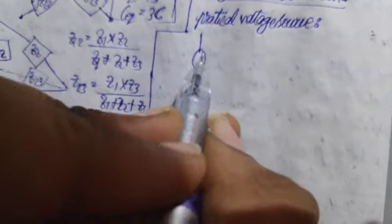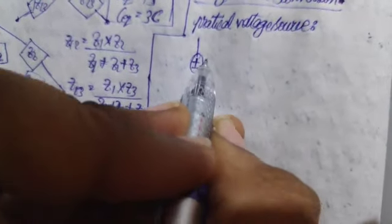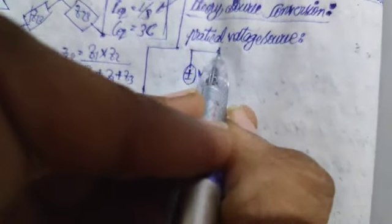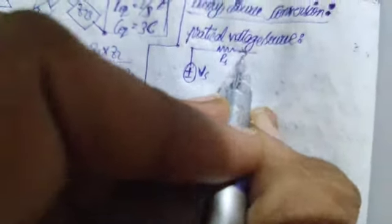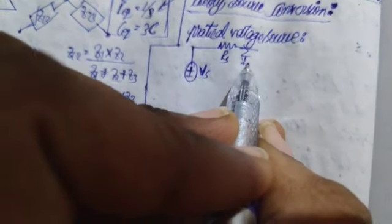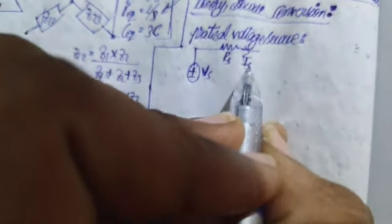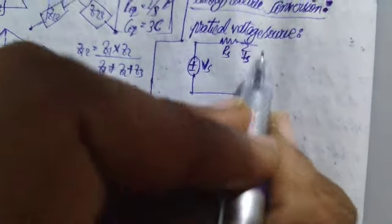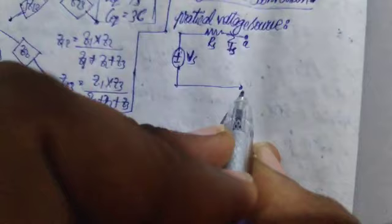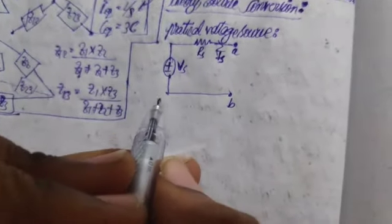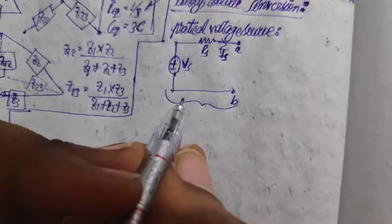First, let's assume we have a practical voltage source. For the practical voltage source we have a positive-negative polarity with an internal resistance RS, and the current passing through it is IS (subscript S). We have terminals AB right here — this is the practical voltage source.